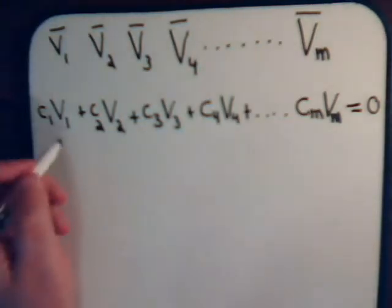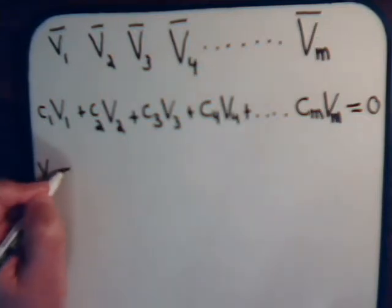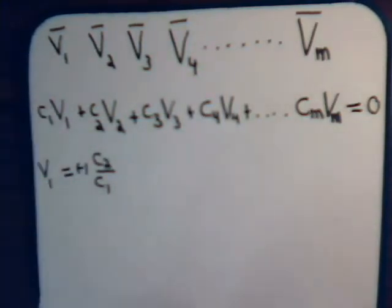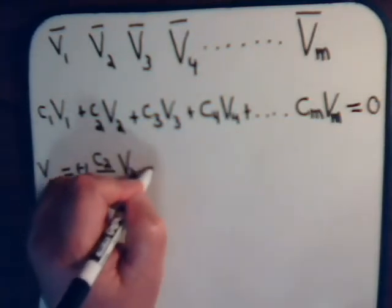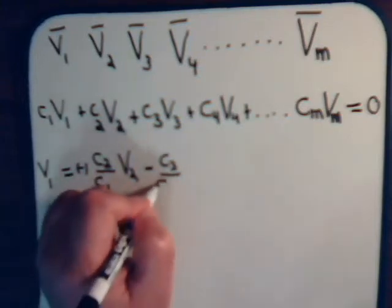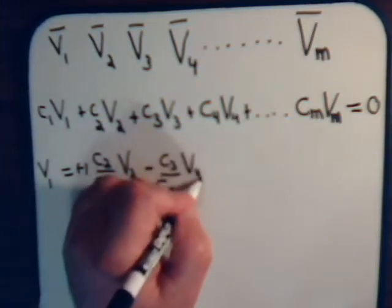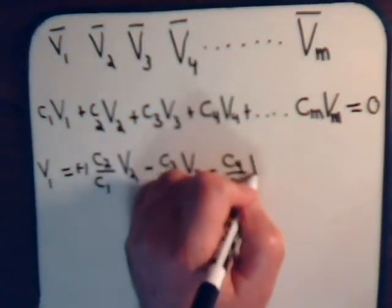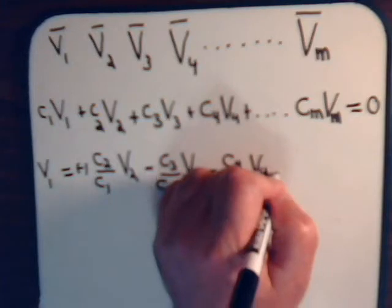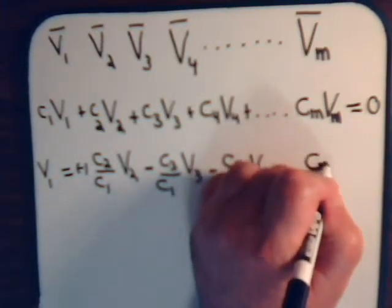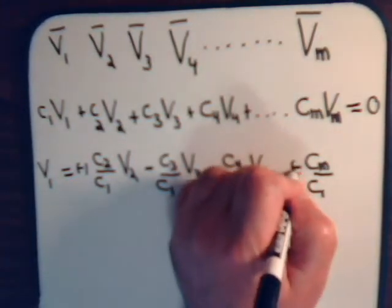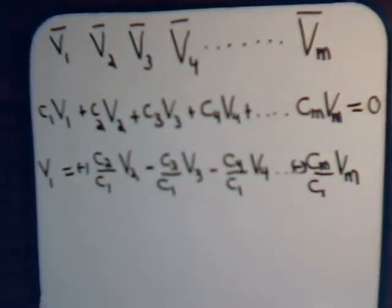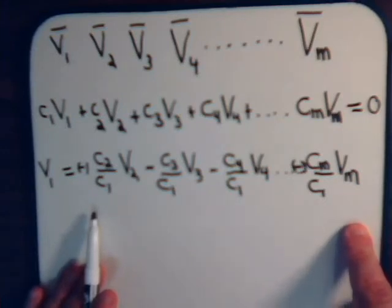So if that's true, then we could say vector v1 equals minus c2 divided by c1 times v2 minus c3 divided by c1 times vector v3 minus c4 divided by c1 times vector v4, and so forth, until we get to the last one. So vector v1 would be some combination of these other vectors here.